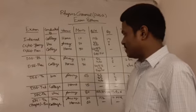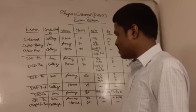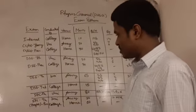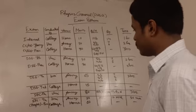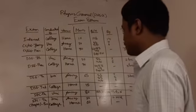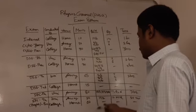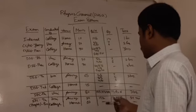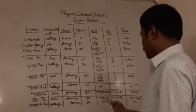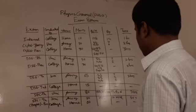Finally, you have the SEC, or skill enhancement course, which has a theory part and a project part. The theory part of the SEC exam is conducted by the university and has a total weightage of eighty marks, with ten questions to be attempted out of twelve of two marks each, four questions out of six of five marks each, and four questions out of six of ten marks each. The total time is three hours.